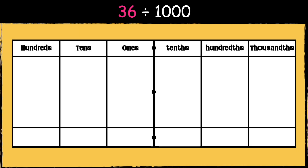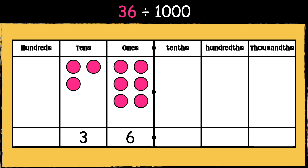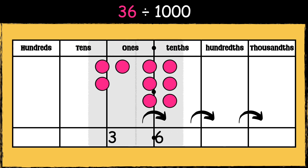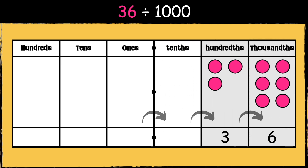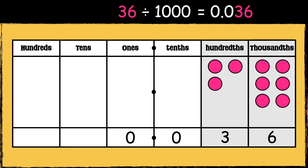Here's another example: 36 divided by a thousand. Both digits need to move three places to the right, so 36 becomes three hundredths and six thousandths. We need to use zeros as placeholders to show that there are no ones and no tenths, so the answer is zero point zero three six.